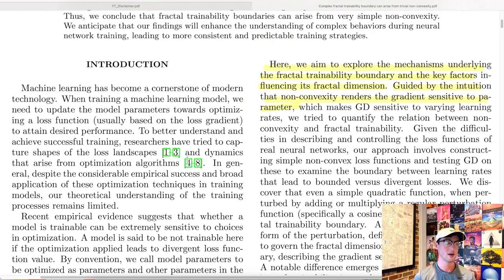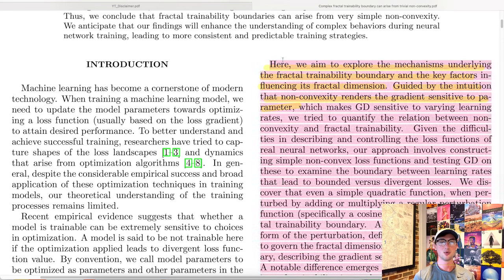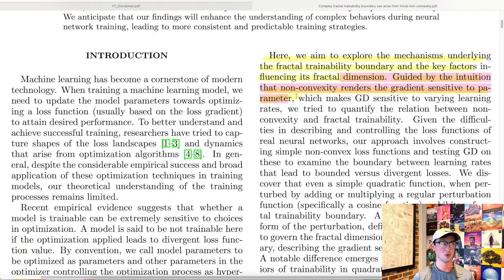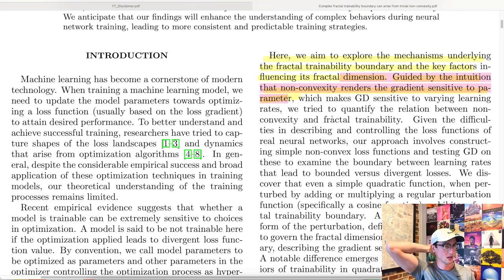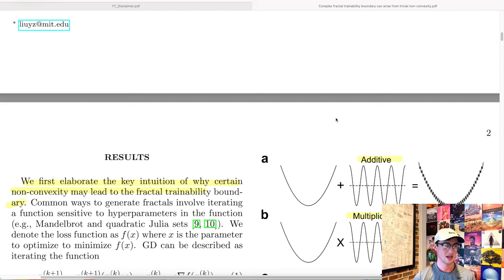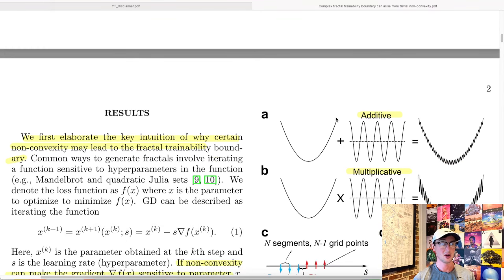It's a very natural-looking fractal — not Mandelbrot-style, more of a Lyapunov style. Very organic-looking. This paper aims to explore the mechanisms underlying the fractal trainability boundary and the key factors influencing its fractal dimension, guided by the intuition that non-convexity renders the gradient sensitive to parameters. The hypothesis is that we can analyze convexity and figure out if that is what causes these fractal learning rate training boundaries.